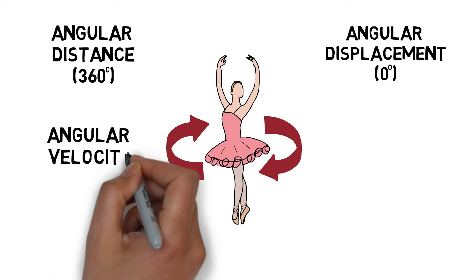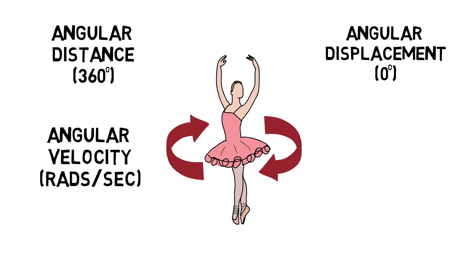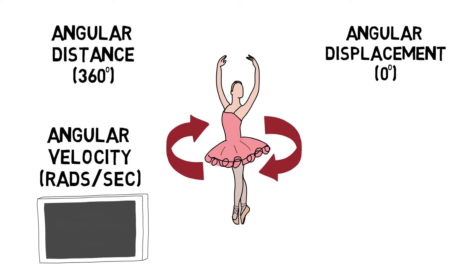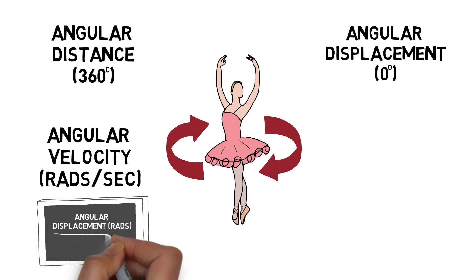Angular velocity is the rate of change of angular displacement or the rate of spin. It is measured in radians per second. Angular velocity can be calculated by taking angular displacement over time.